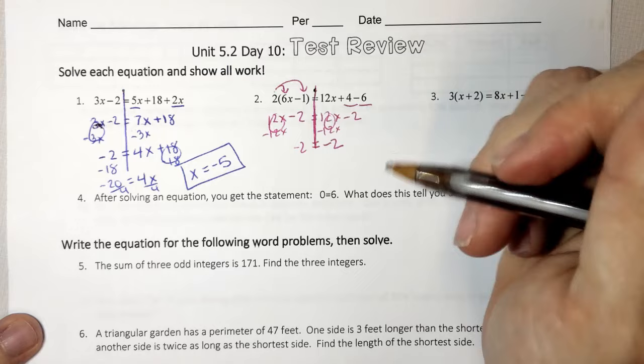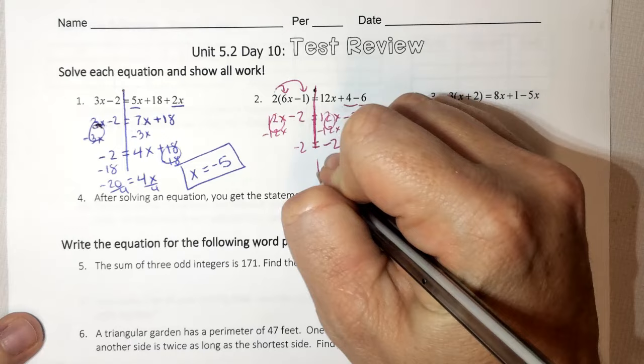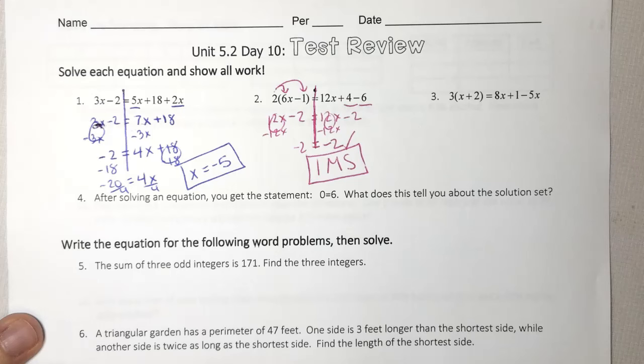When all of my variables cancel, it is a special case. And this is true. Negative 2 does equal negative 2. So it's IMS for infinitely many solutions.